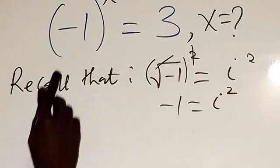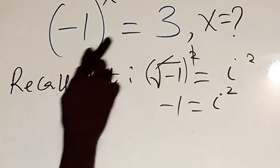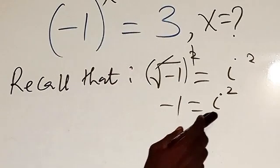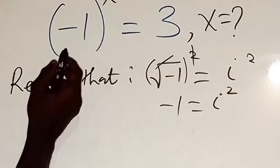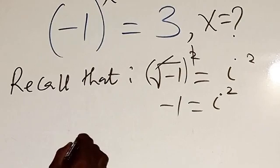So therefore, anywhere I see minus one from this equation, I'm going to replace it by i squared. So now here, this is going to be i squared.